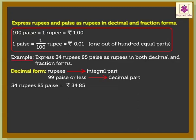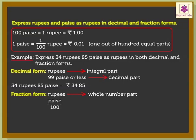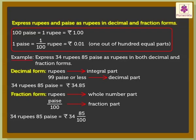In fraction form, the rupees form the whole number part and paise are written with 100 in the denominator to get the fraction part. So 34 rupees 85 paise is expressed as 34 and 85 upon 100 rupees as a fraction.